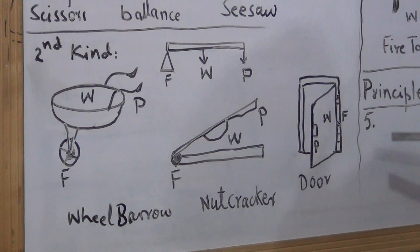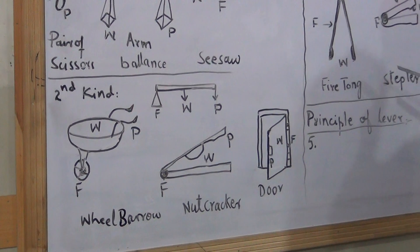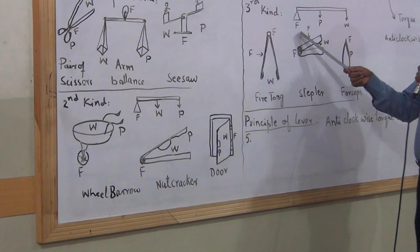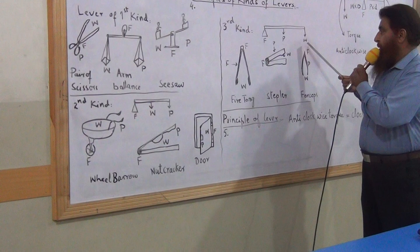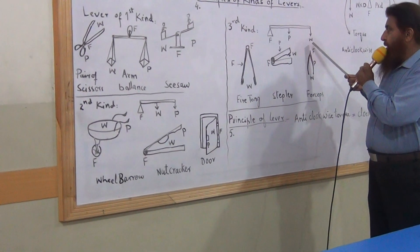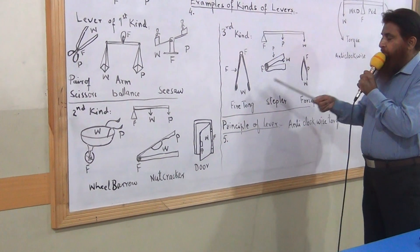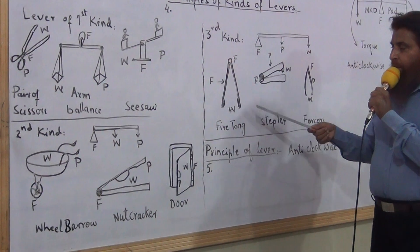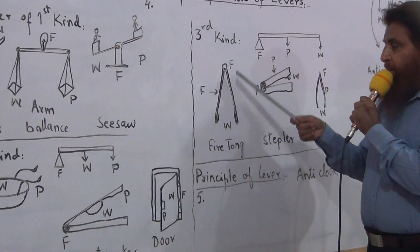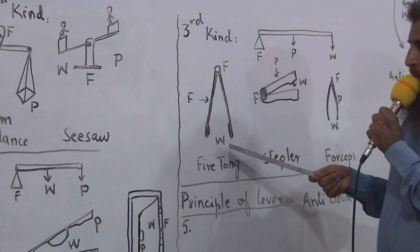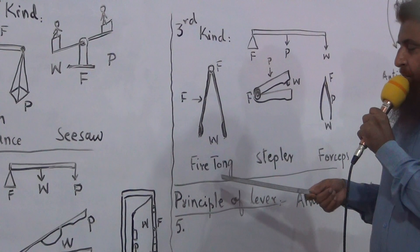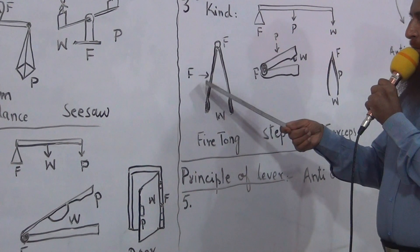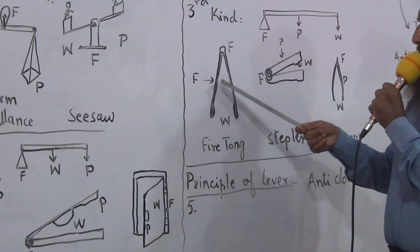The third kind of lever is where the effort is in the center, between the fulcrum and the load. This is demonstrated with five tons of effort applied successfully.